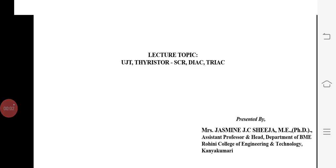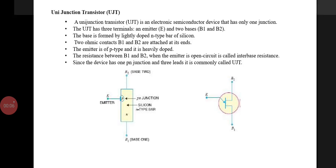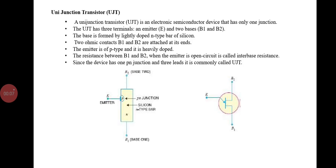Let us see about UJT transistor, thyristor, diac and triac. First one is UJT. A unijunction transistor is an electronic semiconductor device that has only one junction. The UJT has three terminals: an emitter and two bases, B1 and B2.